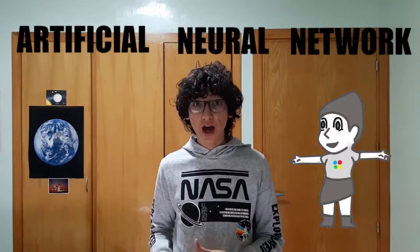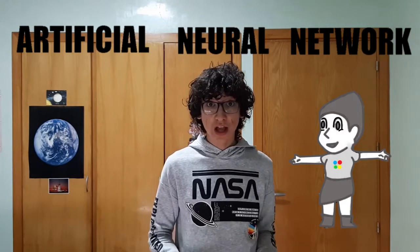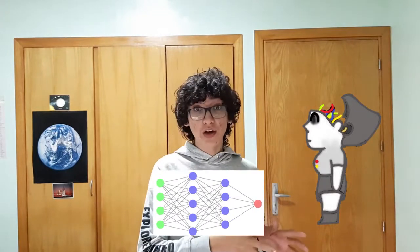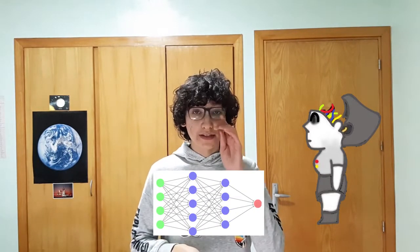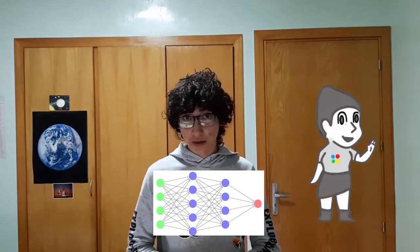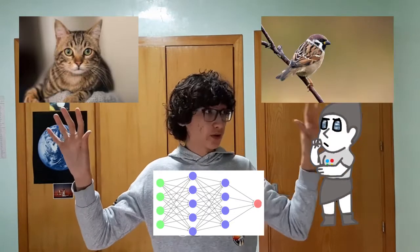It's a succession of several layers of neurons connected to each other. The only thing we know is what happens at the beginning and at the end of this process. Let's take a case. I want Google Home here to distinguish between this picture of a cat and this picture of a bird.